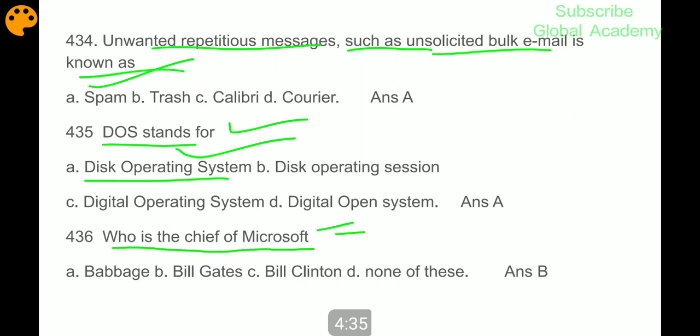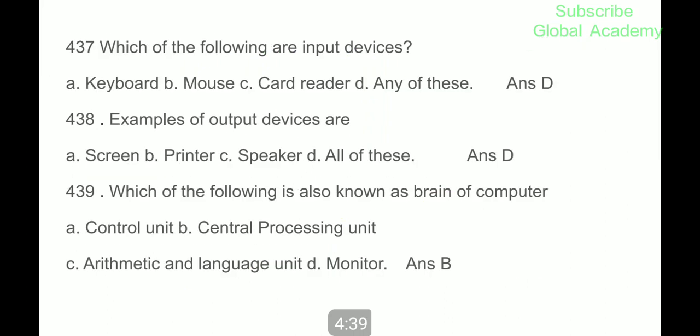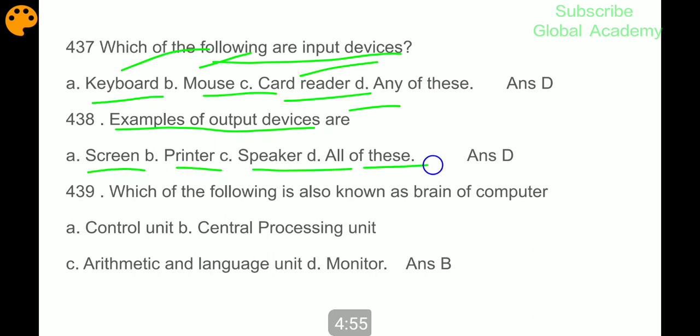Which of the following are input devices? Keyboard, mouse and card reader - they are all input devices. Examples of output devices are screen, printer, speaker - all of those. All these are output devices.